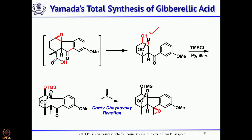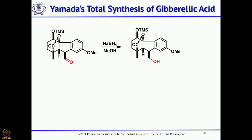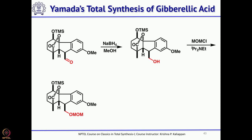The Corey-Chaykovsky reaction gives the epoxide. What you need in that position is a CHO, so this epoxide, when treated with BF3, undergoes rearrangement: the epoxide opens up to form an enol, and that enol is nothing but the corresponding aldehyde. Then reduce the aldehyde to the corresponding primary alcohol with sodium borohydride/methanol and protect that as a MOM ether. The transient TMS group is cleaved with TBAF to get the secondary alcohol, which is then protected as a SEM ether by treatment with a Hünig base and SEM chloride.